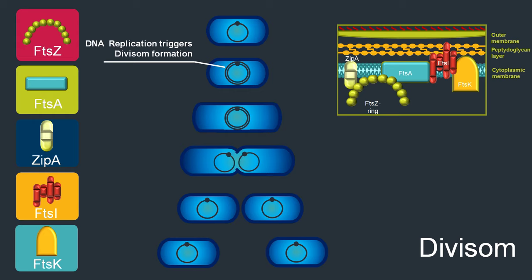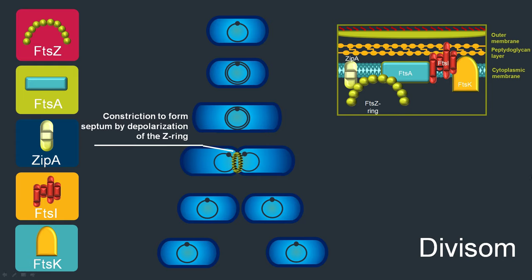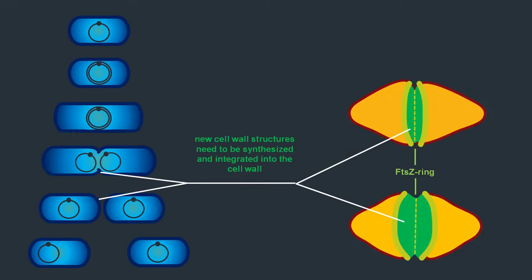To ensure that DNA replication of the chromosome is complete, replication is actually initiated even before the divisome is formed. Only when DNA replication is complete is the FTSZ ring formed in the cell center. When the chromosome is fully replicated and the divisome is assembled, the septum is formed by depolarization of the FTSZ ring — the ring constricts to separate the arising daughter cells. Since FTSZ has enzymatic activity, it delivers the energy for this constriction reaction itself. The proteins of the divisome then ensure synthesis of new cytoplasma membrane as well as new cell wall structures, shown in green.